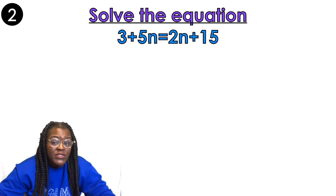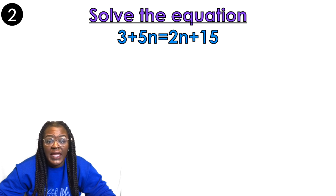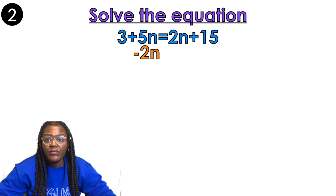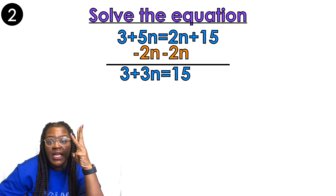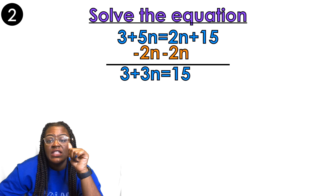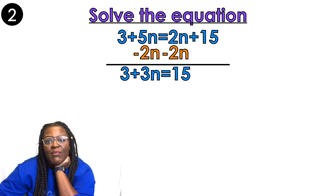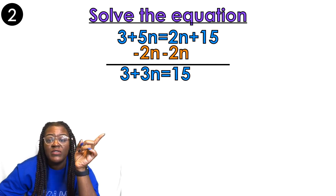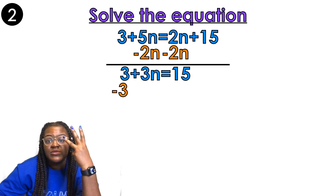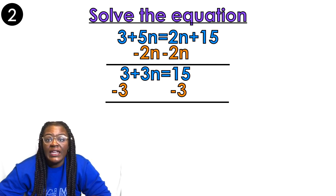I'm going to move the 2n to be with the 5n. It's a positive 2n, so I'm going to subtract 2n from both sides. I bring the 3 down, and 5 minus 2 is 3n. The 2n and the minus 2n cancel out, giving me 3 plus 3n equals 15. Now I subtract 3 on both sides, and I get 3n equals 12.